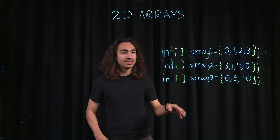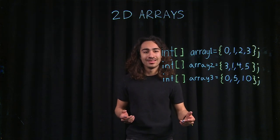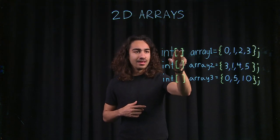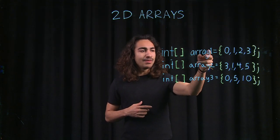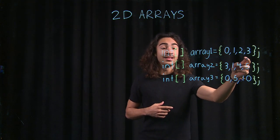Before we're talking about 2D arrays, let's refresh our memory on what a 1D array is, or a regular array. To declare a regular array, we just do the type, these brackets, the name of the array you want to call it, and the data in that array.